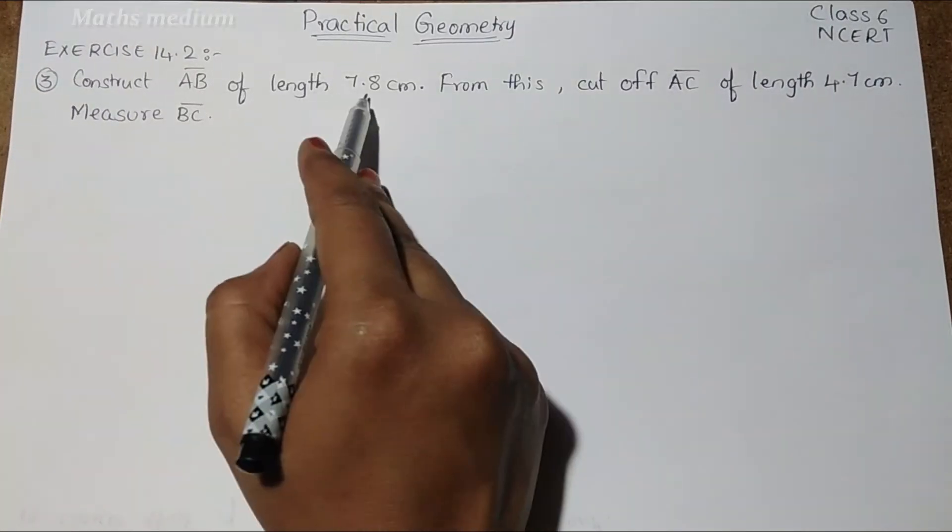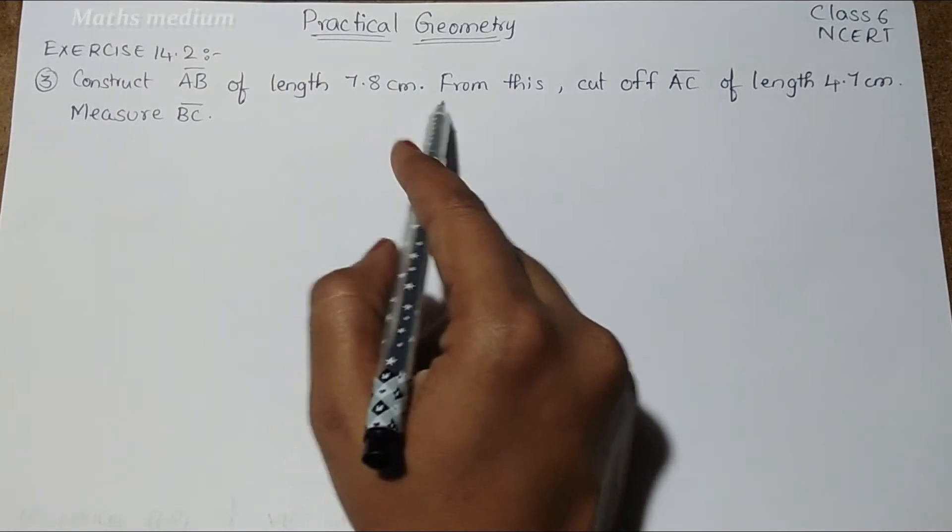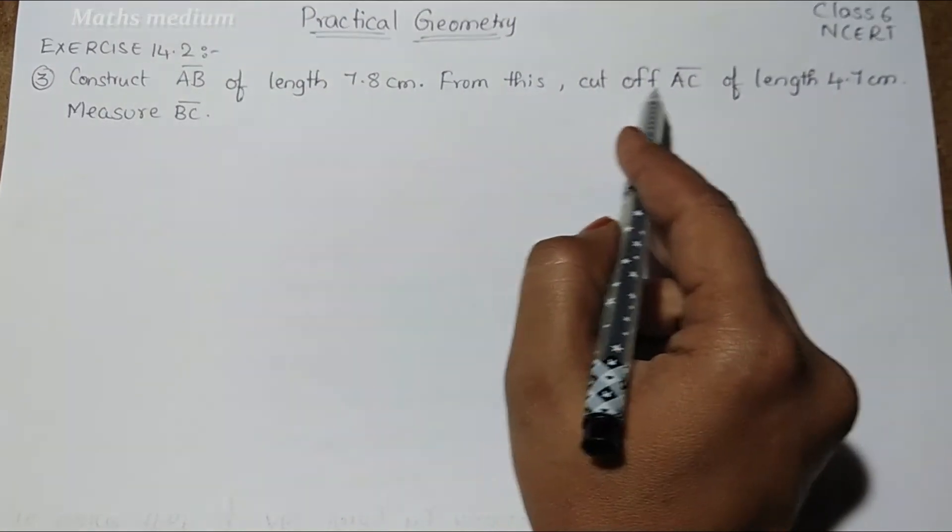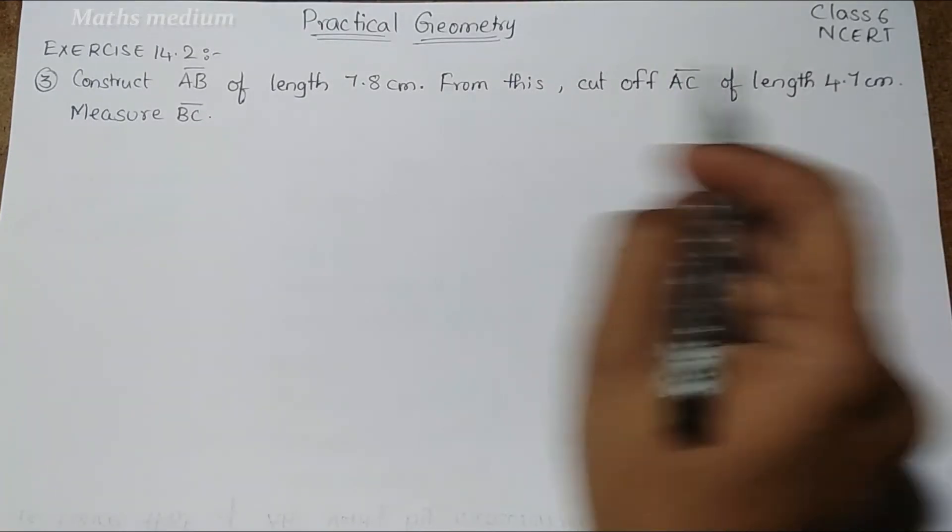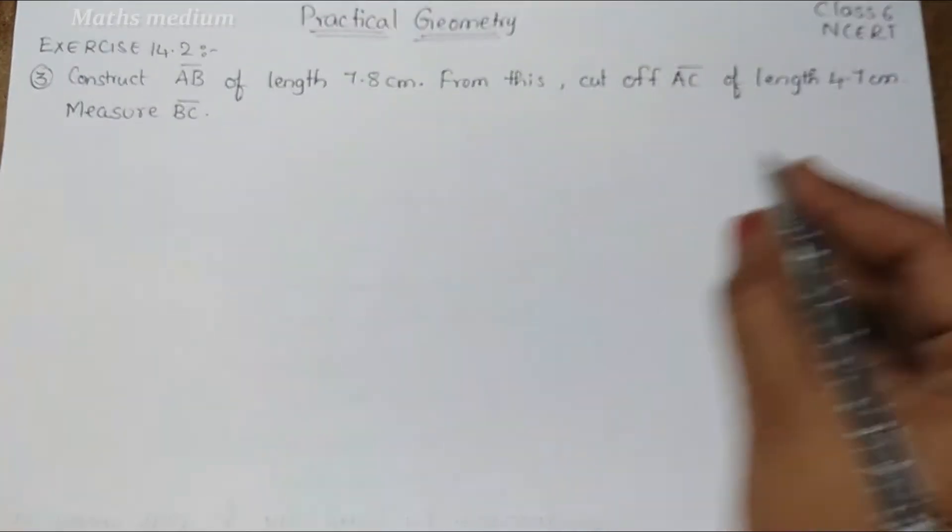Construct AB bar of length 7.8 cm. From this, cut off AC bar of length 4.7 cm. Measure BC bar.